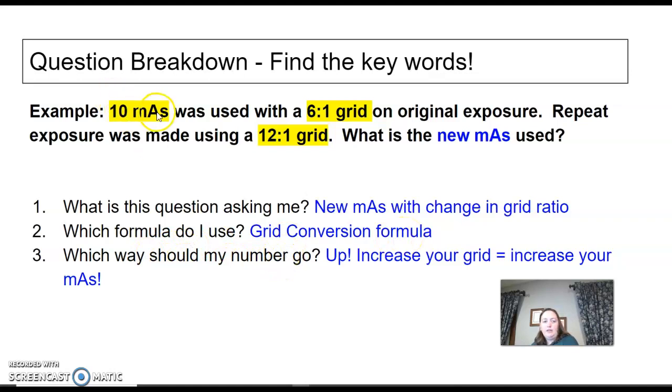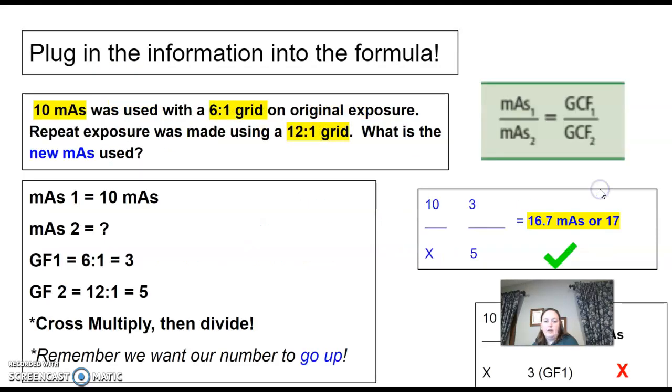This question is telling me I use 10 mAs with a 6:1 grid, and now I have to repeat the exposure with a 12:1. Well, the 12:1 is much higher than a 6:1. So my number has to go up. I need more mAs if I have a higher grid.